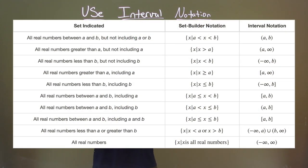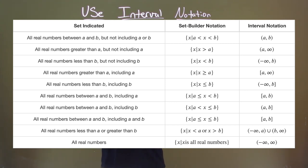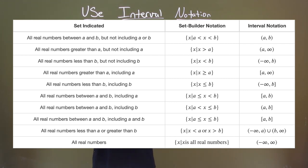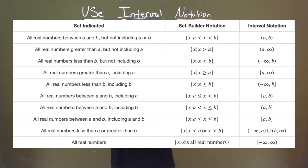The first one says all real numbers between a and b but not including a or b — it looks like this: x such that a is less than x which is less than b, and then they have parentheses on both sides of a and b for interval notation. The other set indicated is all real numbers greater than a but not including a. We can see there: x such that x is greater than a, and then you have a and infinity there with parentheses around them.